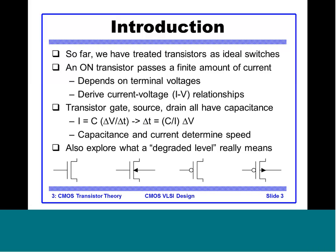The symbols shown are the most common ones used for MOS. The two on the left side are common symbols for NMOS, and the right one with an arrow represents the substrate connection if it needs to be explicitly shown. Similarly, the two rightmost symbols are for PMOS.